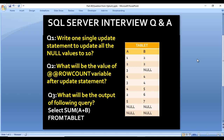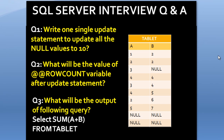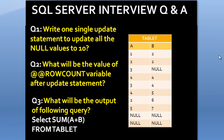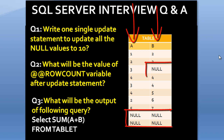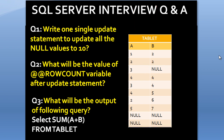The first question is: write one single UPDATE statement to update all the null values to 10. As we can see, we have an input table with two columns — A and B. Column A has two null values and column B has three null values. We want to update all these null values in a single UPDATE statement, setting them to 10.